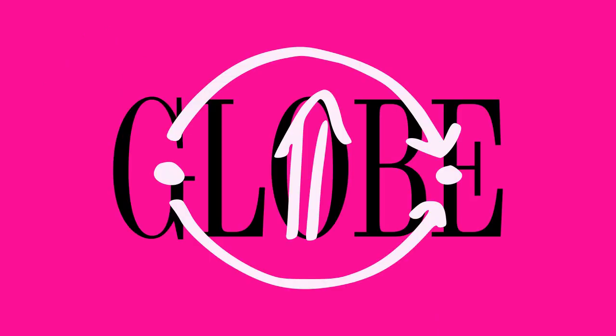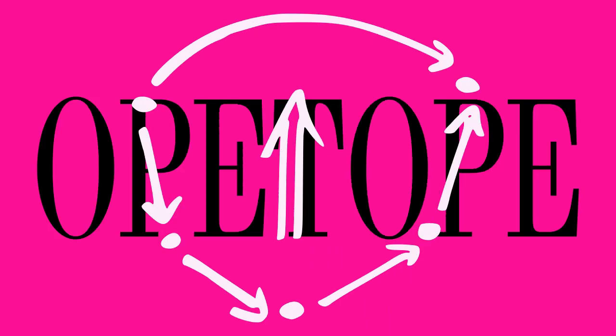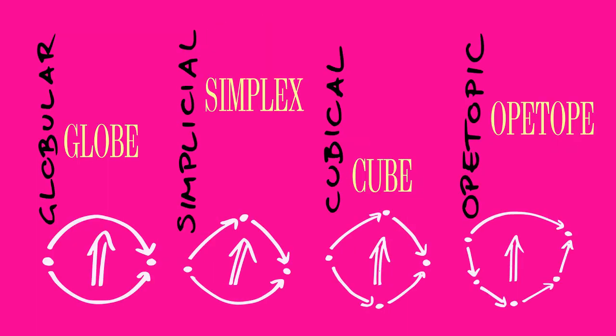Examples of shapes include globes, simplices, cubes, and opetopes, giving rise to globular, simplicial, cubical, and opetopic sets.